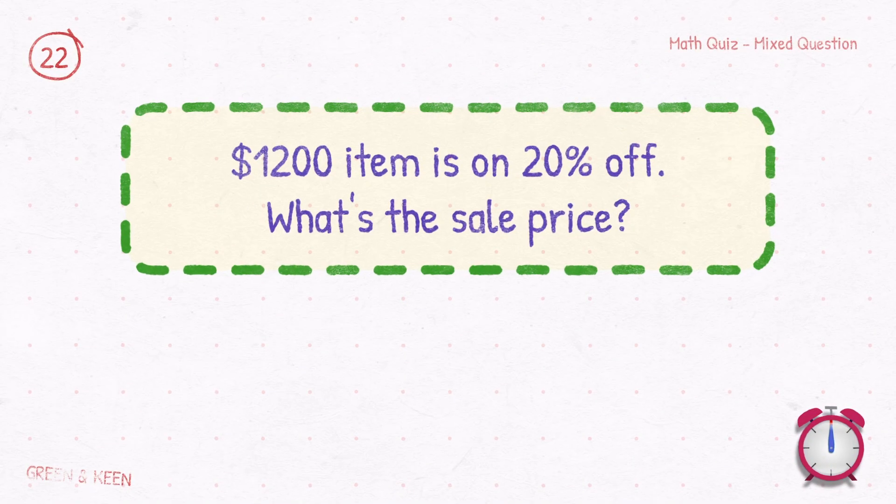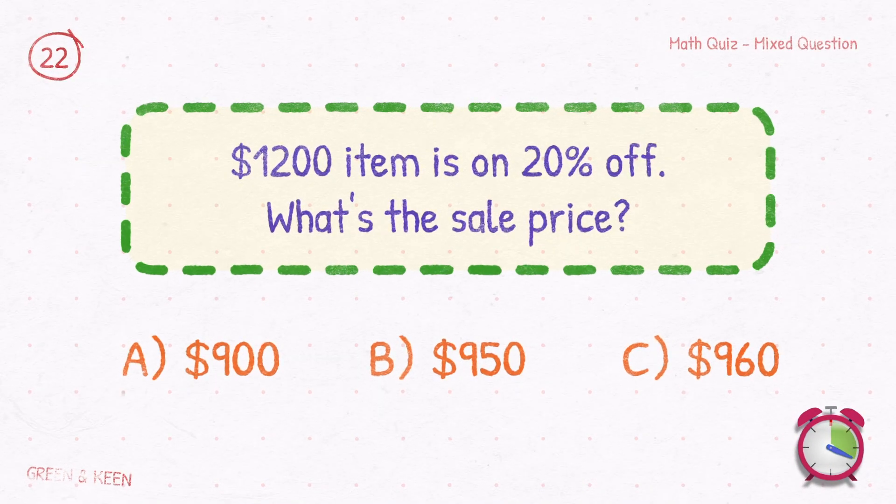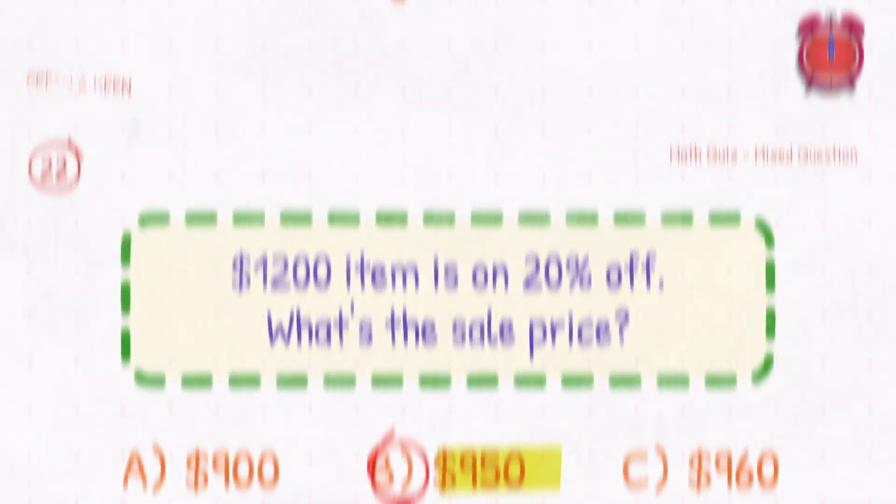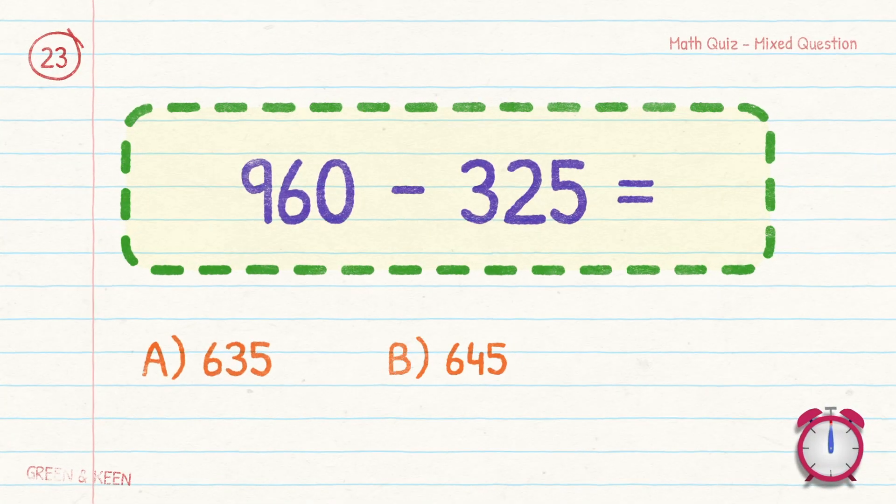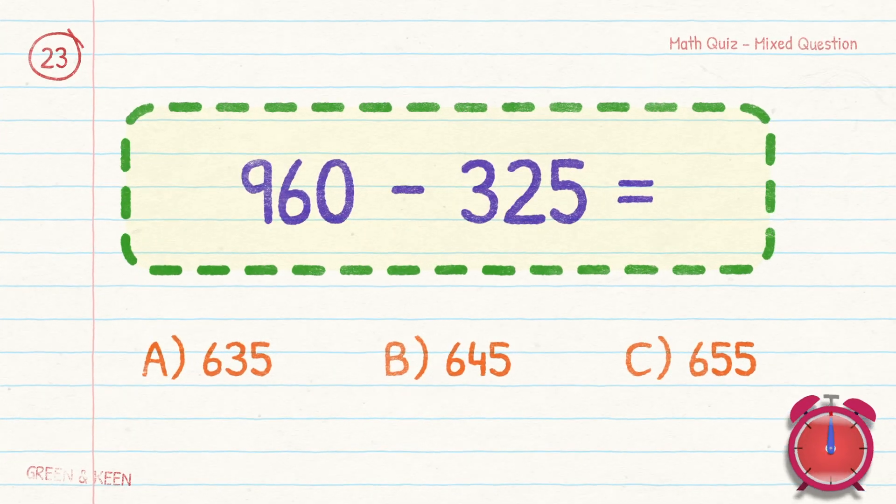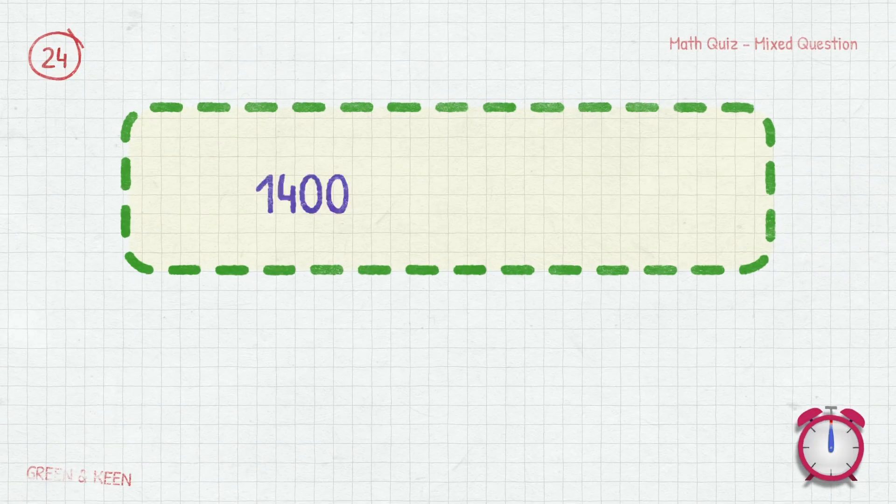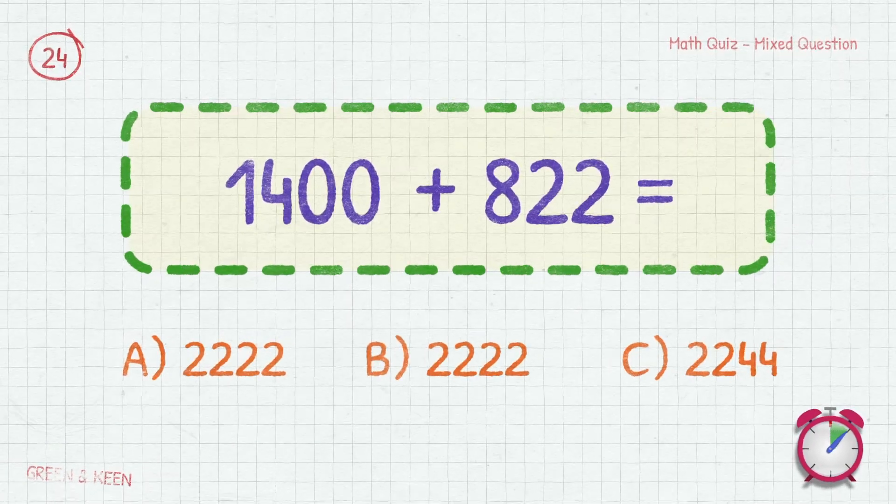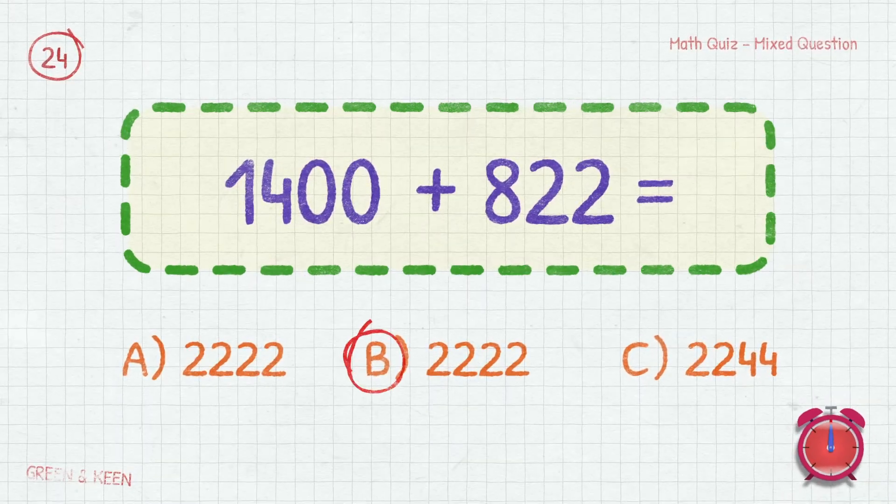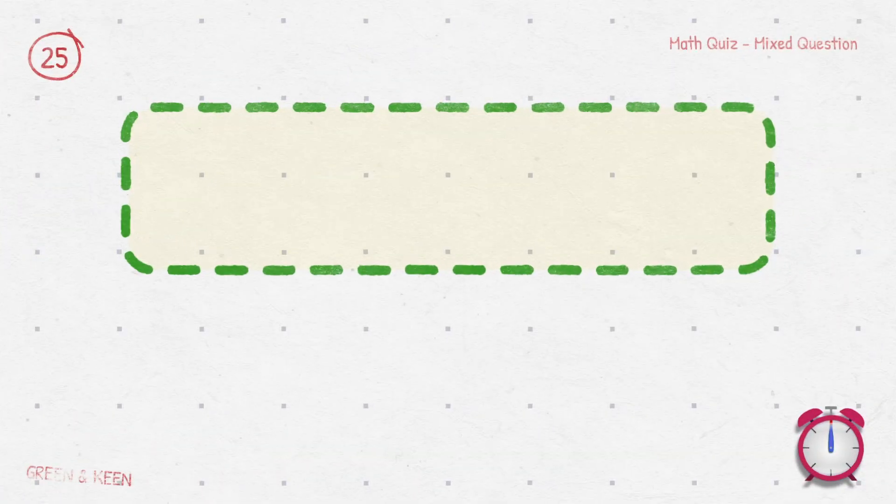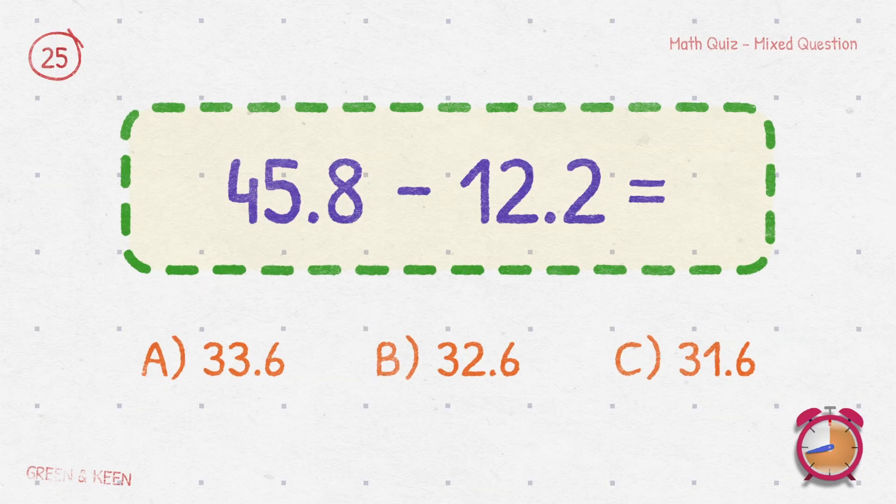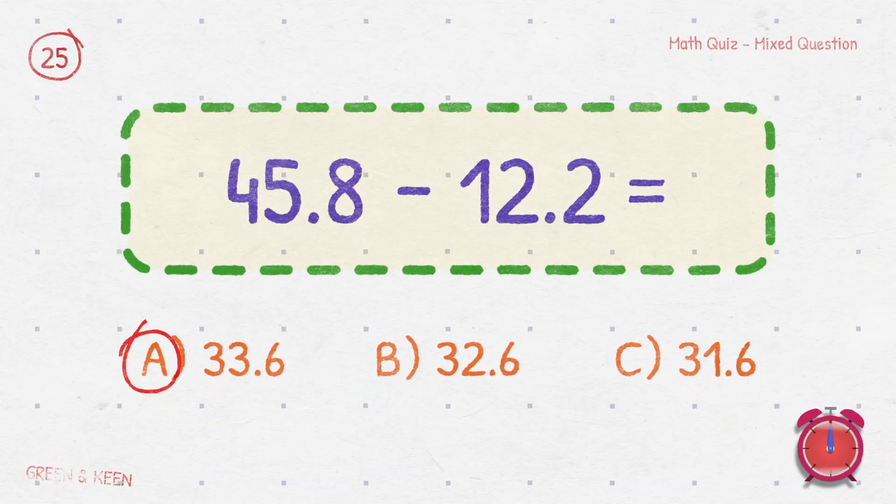A $1,200 item is 20% off. What's the sale price? $960. 960 minus 325 equals? 635. 1,400 plus 822 equals? 2,222. 45.8 minus 12.2 equals? 33.6.